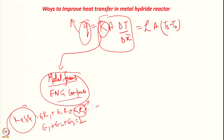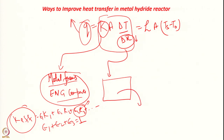The second approach is to reduce the conductive resistance delta-x. This is achieved by using a multi-tubular reactor: instead of a single reactor, multiple tubes are placed inside, each filled with metal hydride, reducing the effective bed thickness and thereby increasing heat transfer inside the reactor.